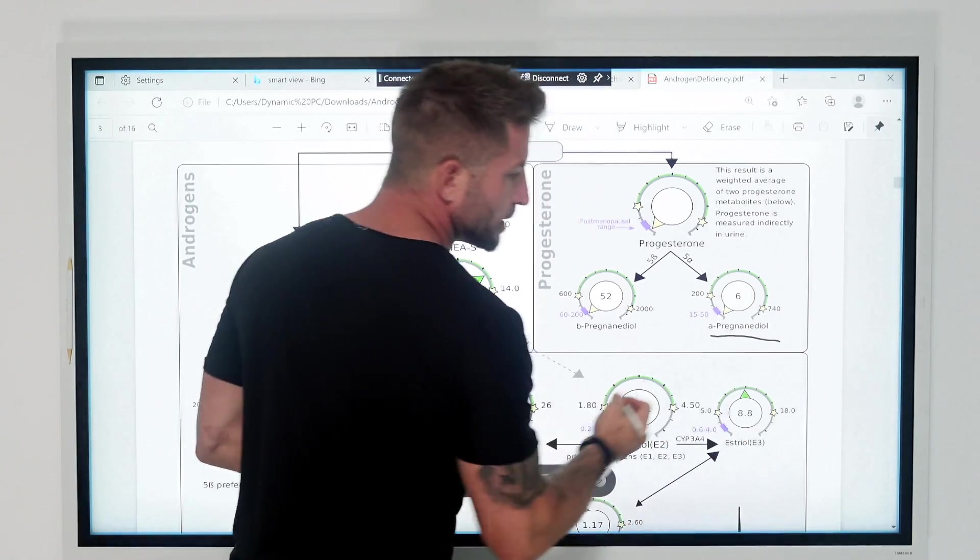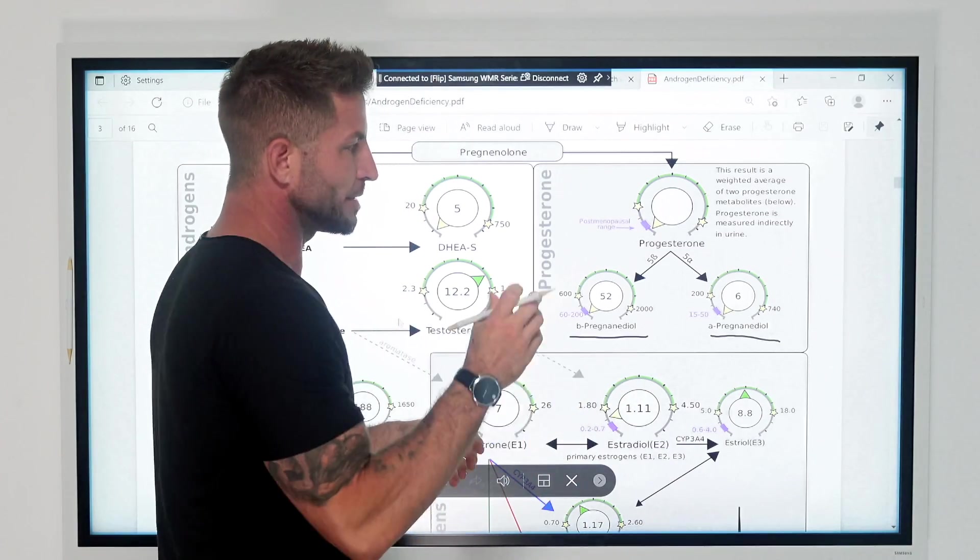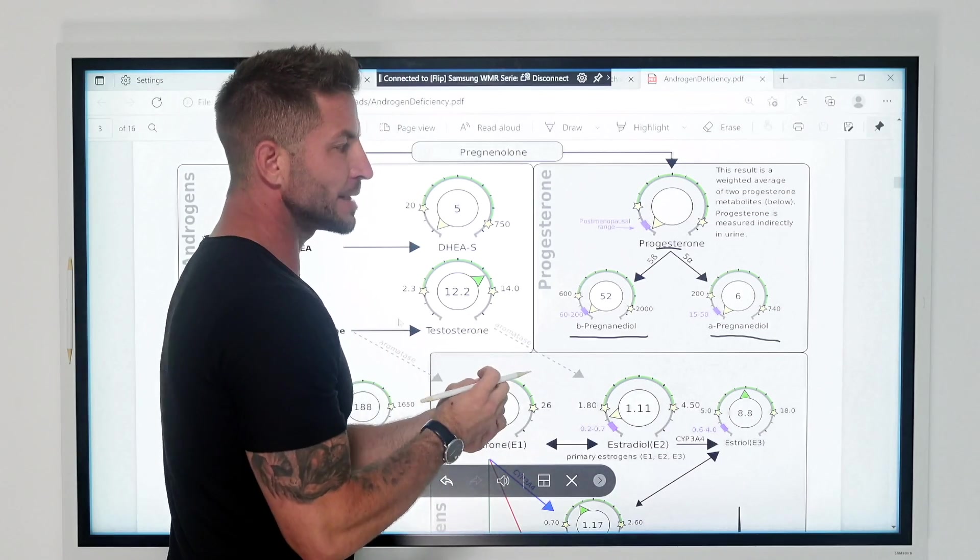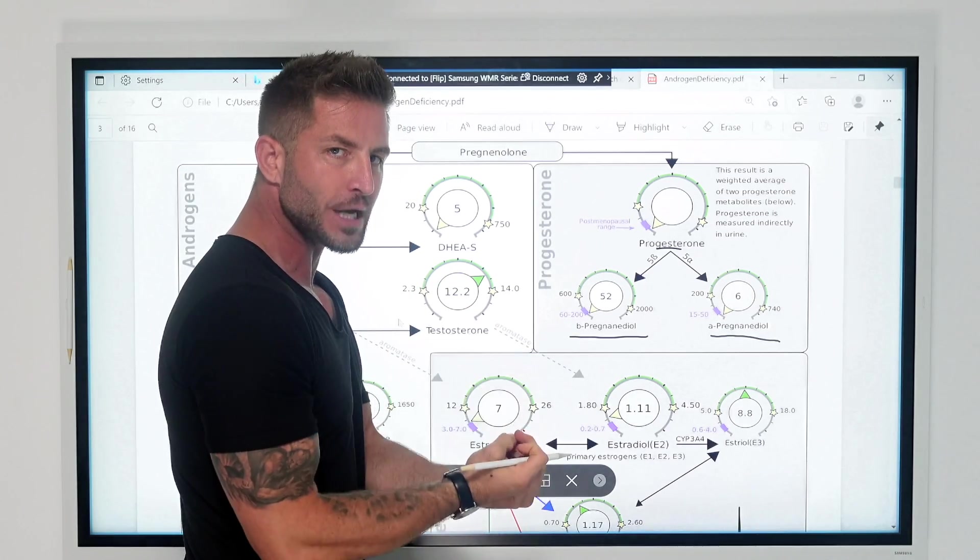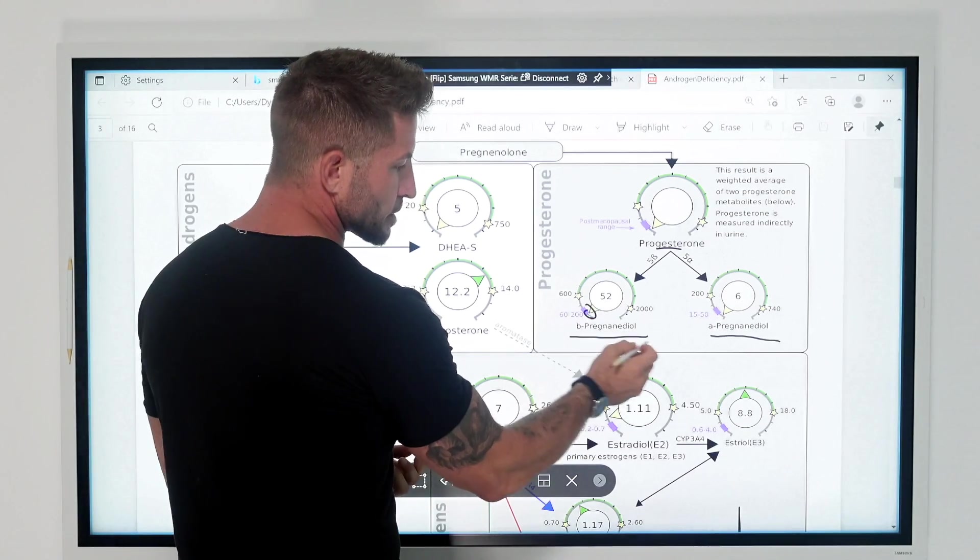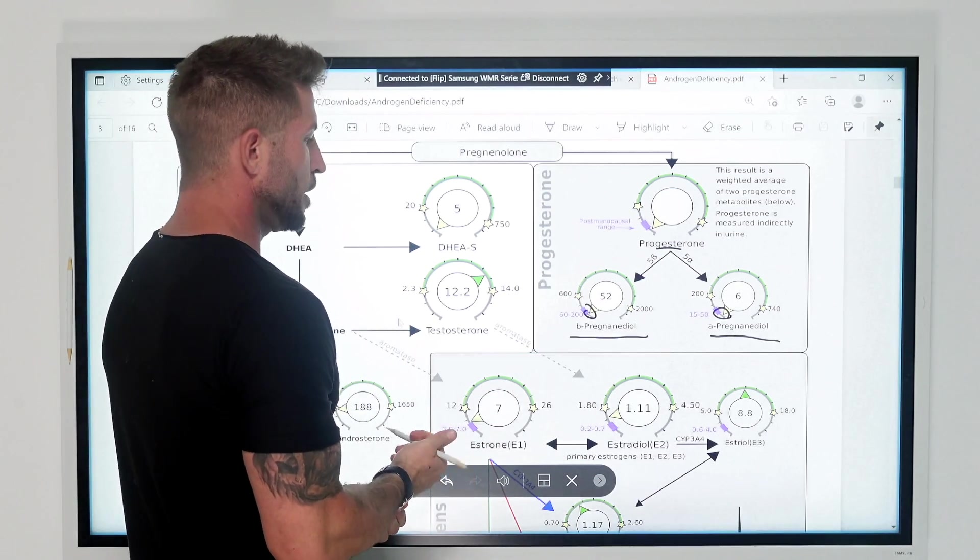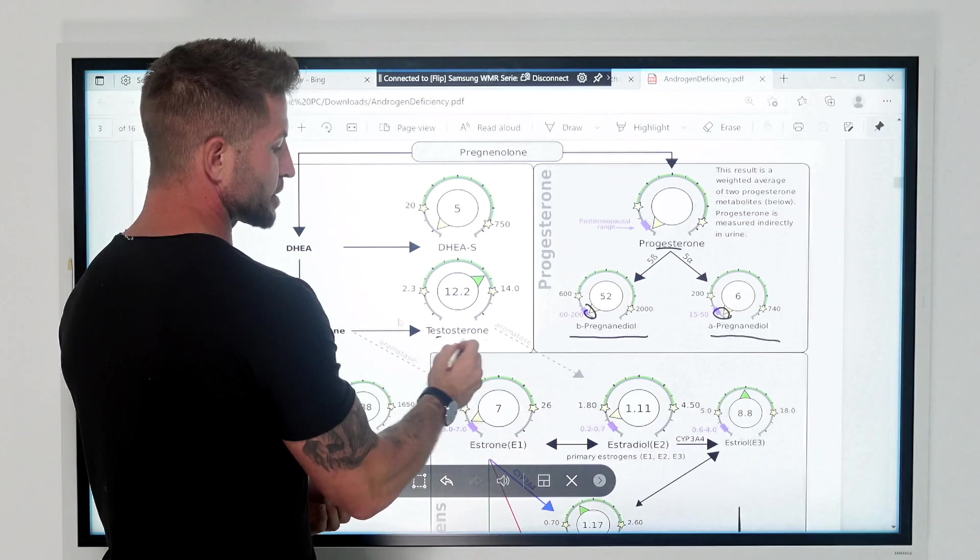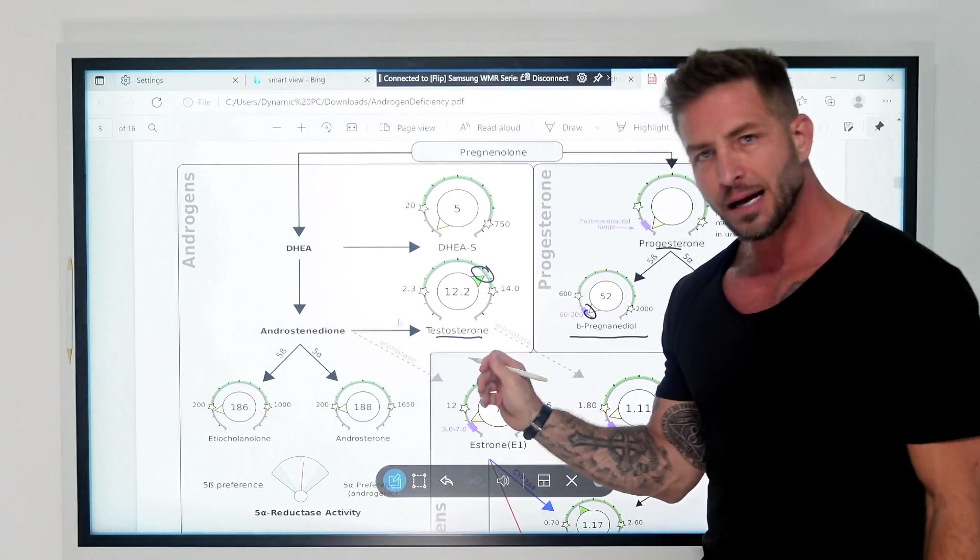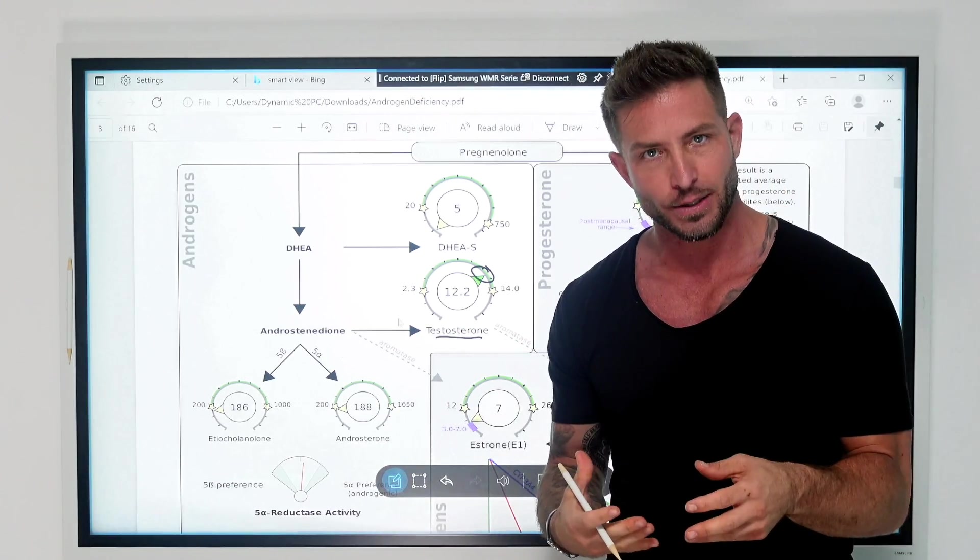This is pregnenodial, okay? Both of these together are the metabolites of progesterone. So, when you add both of these up, it represents the free amount of progesterone inside the body. So, again, we already went over that she's stressed and she's burning her progesterone, okay? We have identified that her testosterone is optimal, okay?